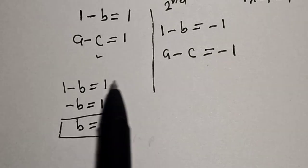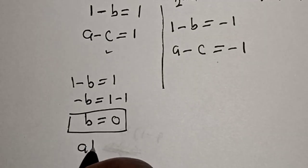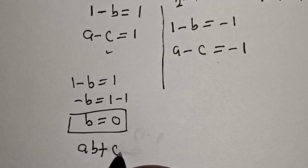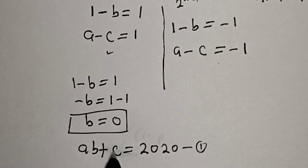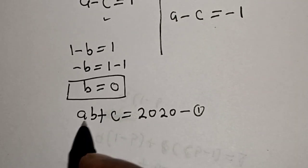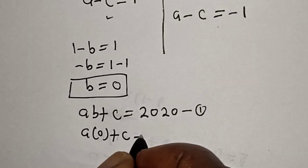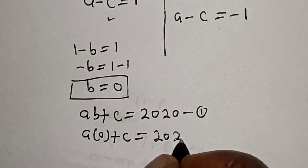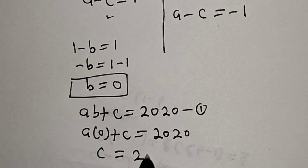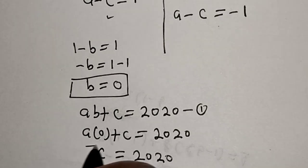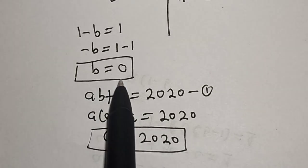Now let's solve for A and C. From equation 1, A(B + C) = 2020, and B = 0. So A(0) + C = 2020, which means C = 2020. We have gotten the value of C, which is 2020, and B = 0.